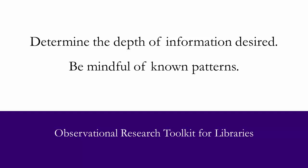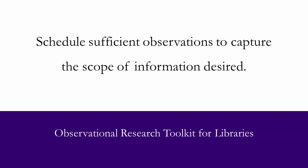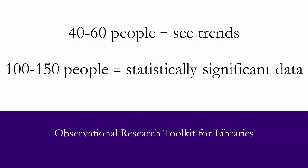Be mindful of patterns you already know. Library user behavior on Sunday may not be the same as behavior on Tuesday, and summer patterns differ from fall and winter. Schedule sufficient observations to capture the scope of information you want or need. Recording the behavior of 40 to 60 people should allow you to see trends. However, if you want to generate statistically significant data, you should plan to observe a minimum of 100 to 150 people and use your knowledge of daily, weekly, and long-term patterns as you schedule your observations.